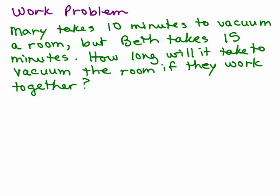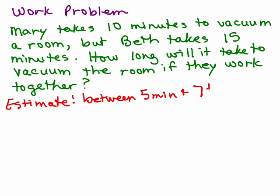Let's do an estimate though. Mary works faster than Beth, right? So let's say Mary works with somebody who works as quickly as she does. They would get done in half of the time, which is half of 10, or 5 minutes. So an estimate, it's going to be more than that because she's working with Beth, who's not as fast. Between 5 minutes and, let's say Beth was working with somebody who worked at her same rate, then they would get done in half the time, half of the 15 minutes, which is 7 and a half minutes. So this tells us our answer should be somewhere in between 5 and 7 and a half minutes. So it's good to just at least think about that even if you don't write it down.